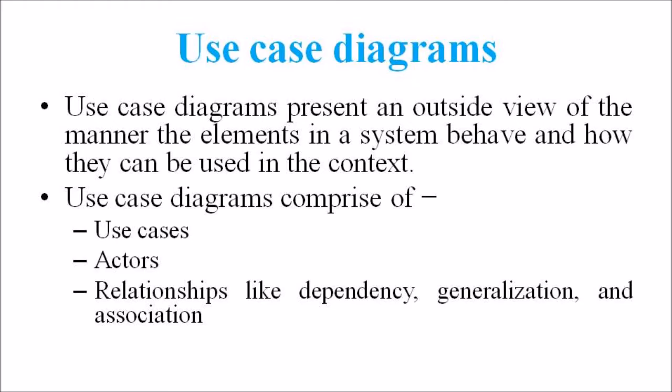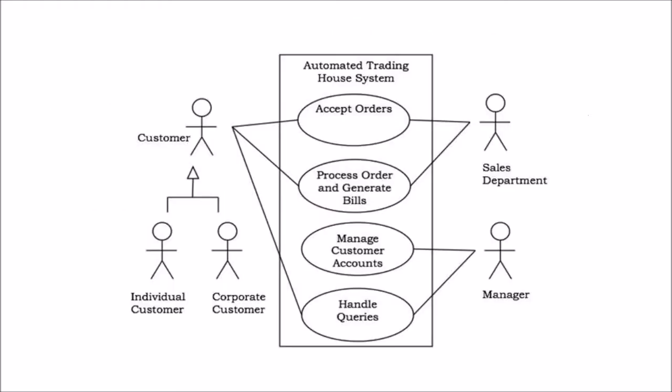The Use Case Diagrams are used to model the context of a system by enclosing all the activities of a system within a rectangle and focusing on the actors outside the system by interacting with it. To model the requirement of a system from the outside point of view, we are also using the Use Case Diagrams.